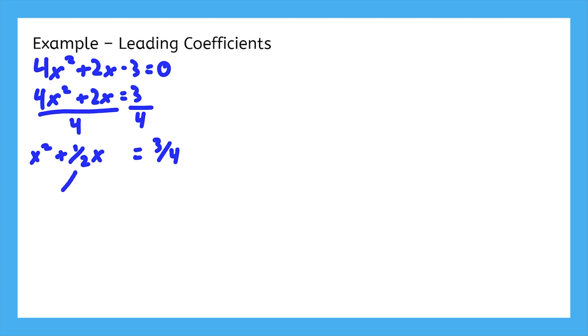This is where leading coefficients get kind of messy. Lots of fractions. Half of a half is 1 fourth, and the square of that is 1 sixteenth. We'll need to simplify that right side by getting a common denominator.